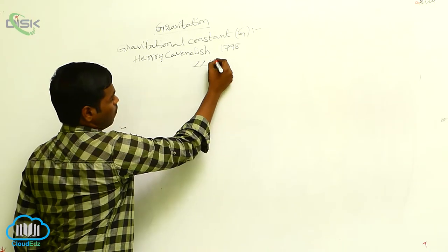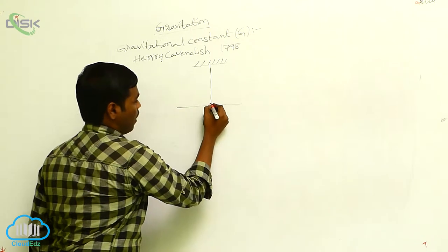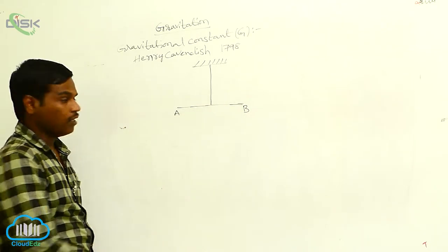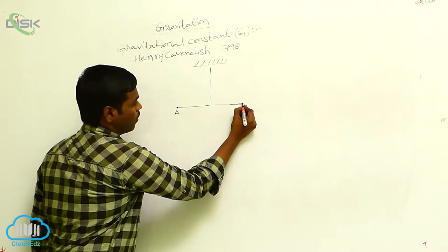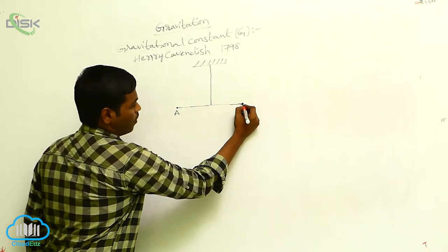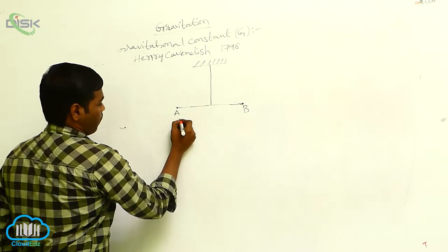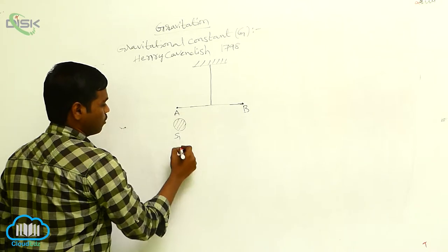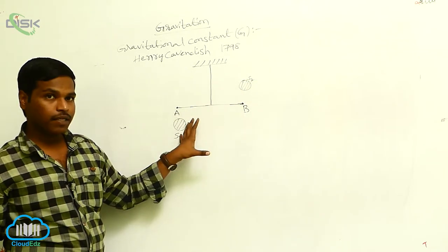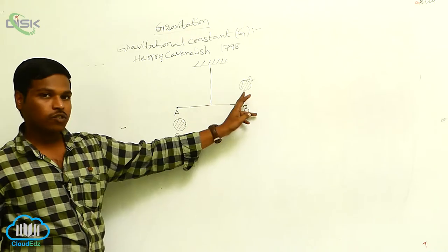There is a support, and to this support he attached a fine string. From this string, a rod AB is suspended. At the ends of this rod, two smaller spherical lead balls are attached. Nearer to these smaller spherical leads, he considered two bigger spheres, S1 and S2, one on either side of the rod AB — that is, S1 and S2 are on opposite sides.